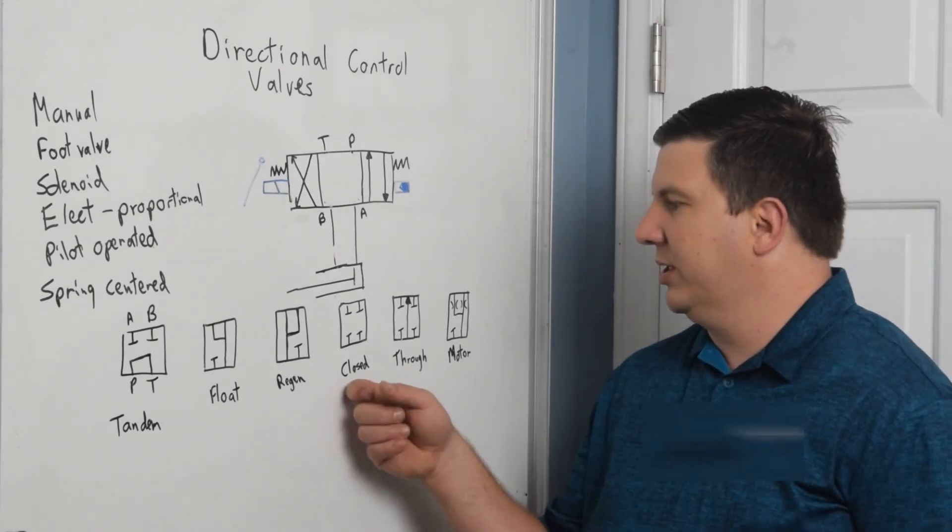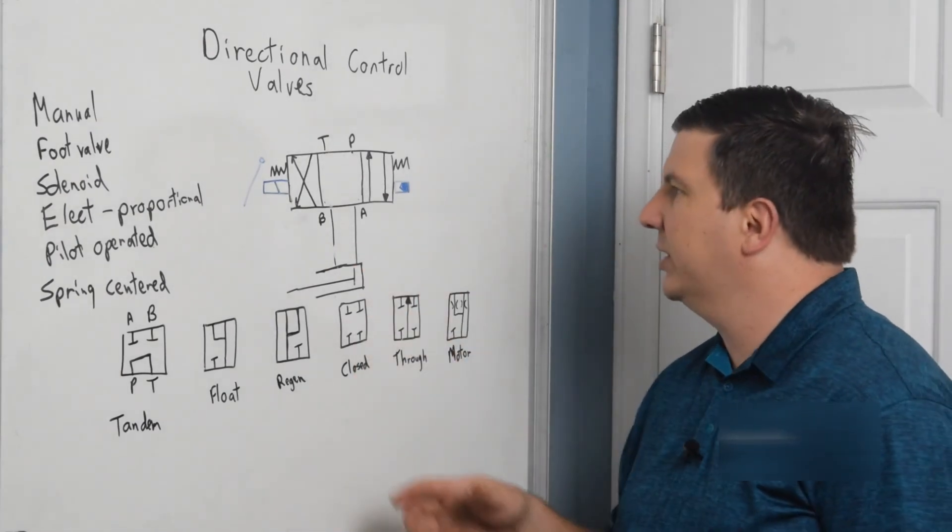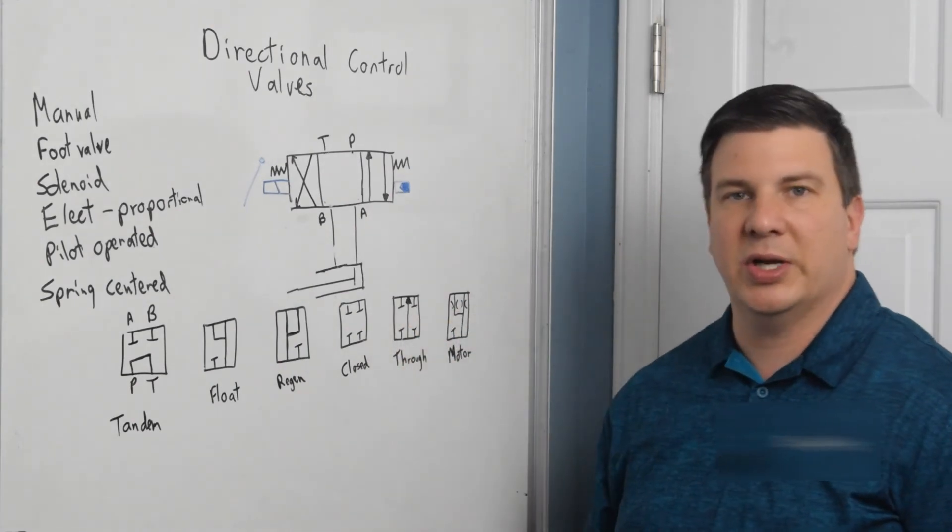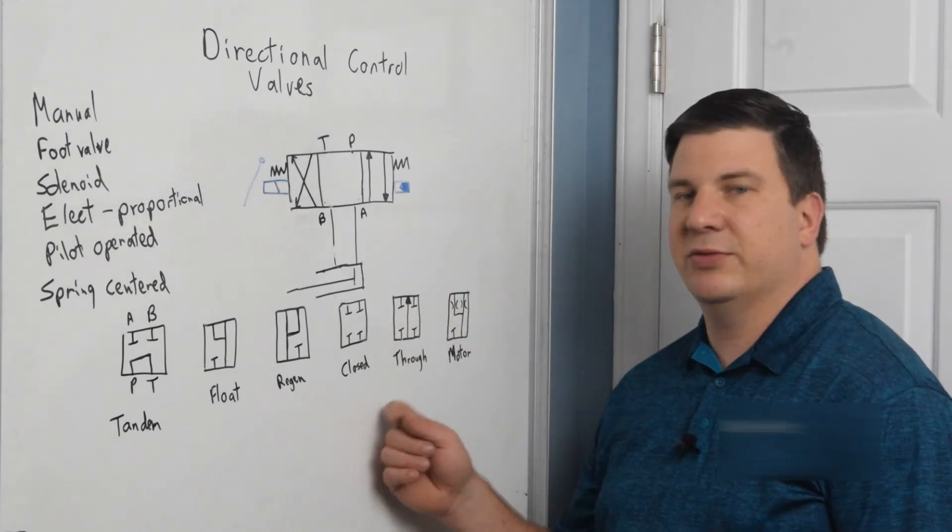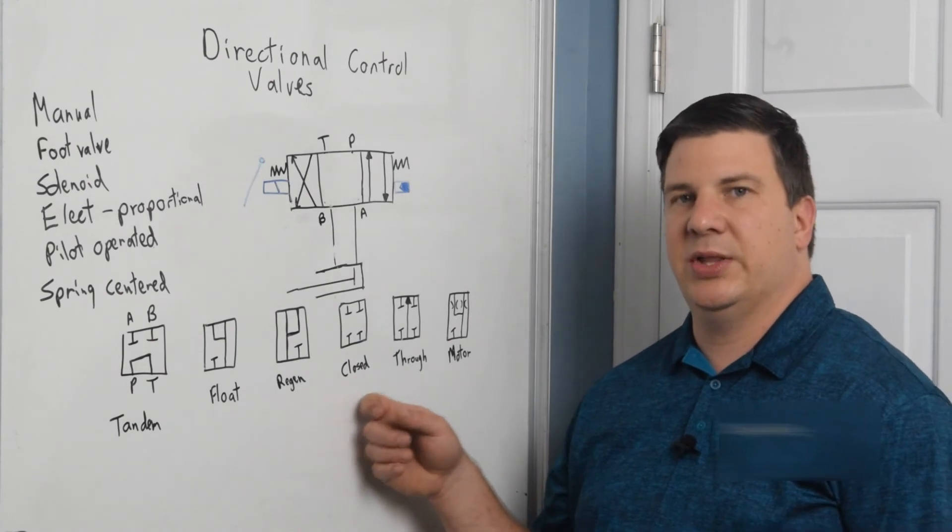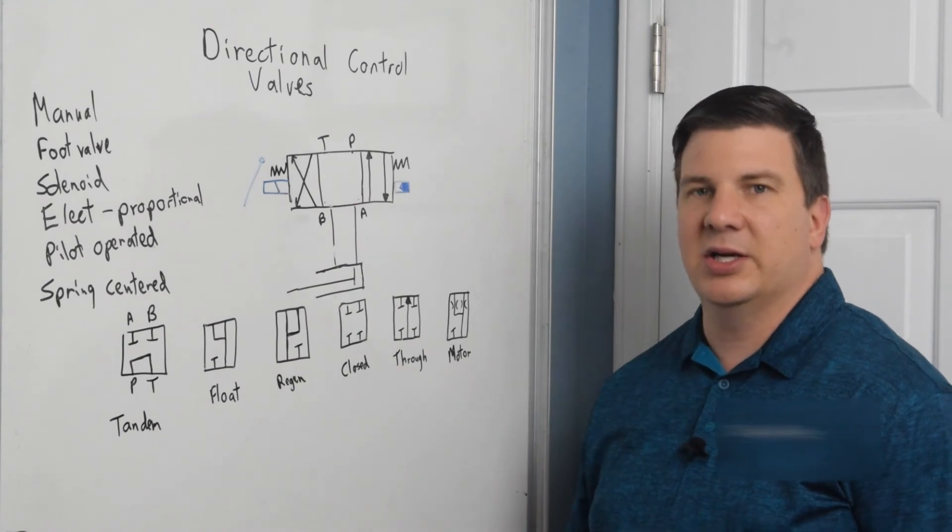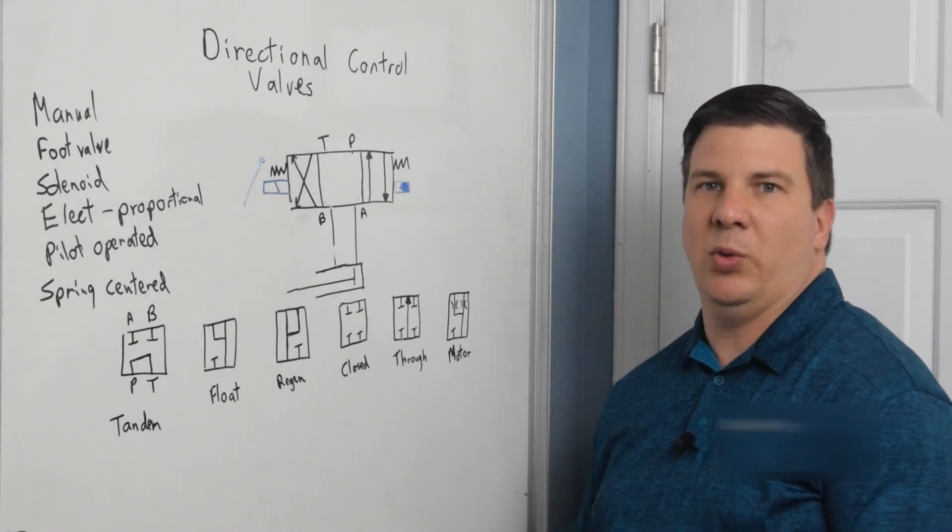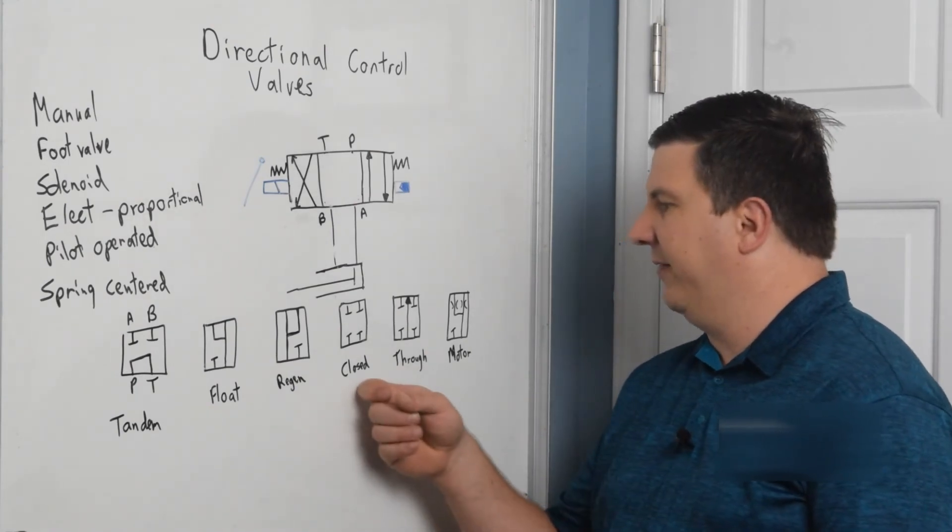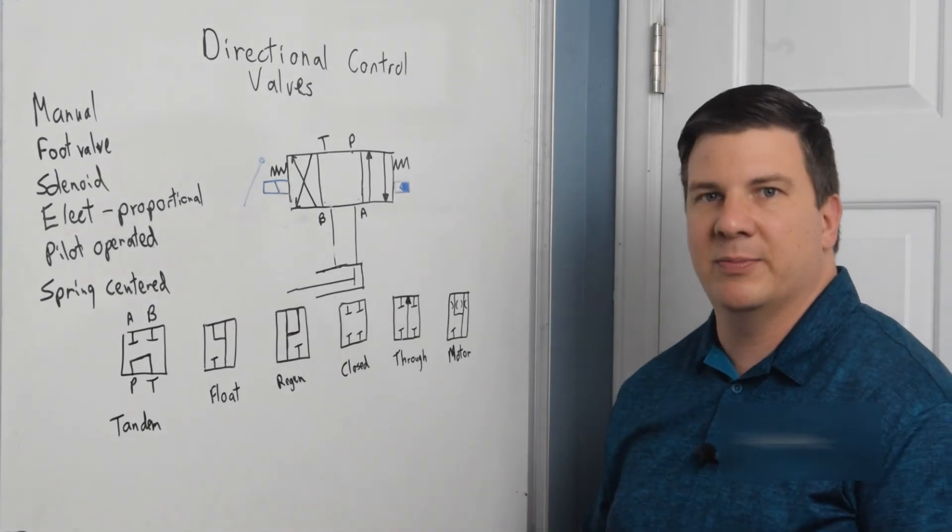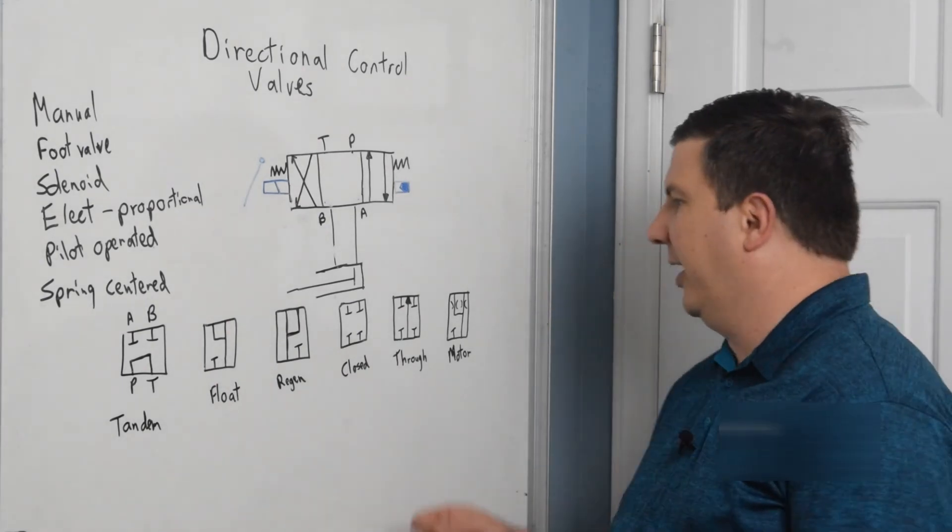So the next one is closed center where everything is closed and there's no oil flowing anywhere. Be very careful. Do not use this with something that's moving very fast. If you have very high flow rates and you stop it, you're going to have a lot of what's called a water hammer effect on this where your hoses will jolt real quickly. Don't do that.